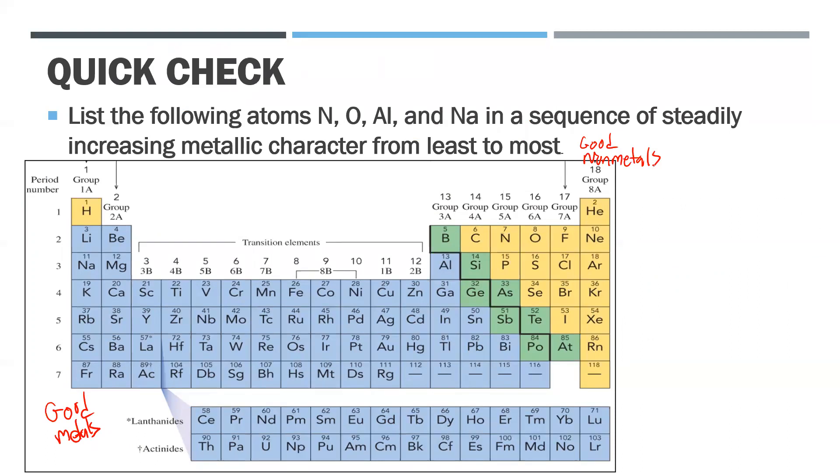So if I'm going to rank these from the least metallic to the most metallic, the one at the very bottom left is going to be the most, and the one in the upper right is going to be the least. So who is the least? Oxygen - oxygen really wants electrons.